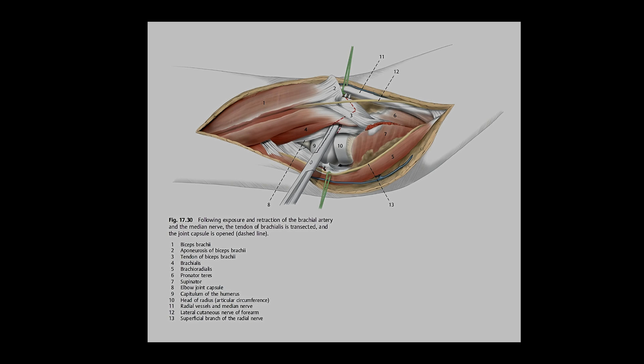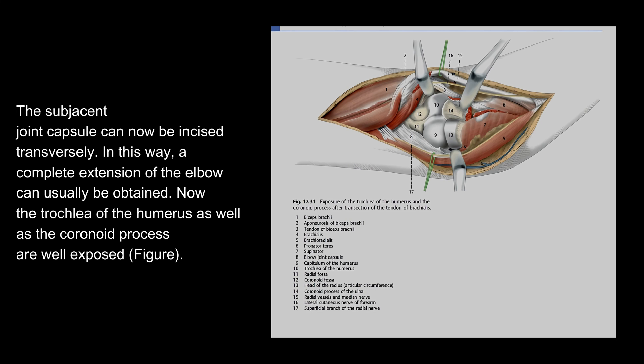The subjacent joint capsule can now be incised transversely. In this way, complete extension of the elbow can usually be obtained. The trochlea of the humerus as well as the coronoid process are well exposed.